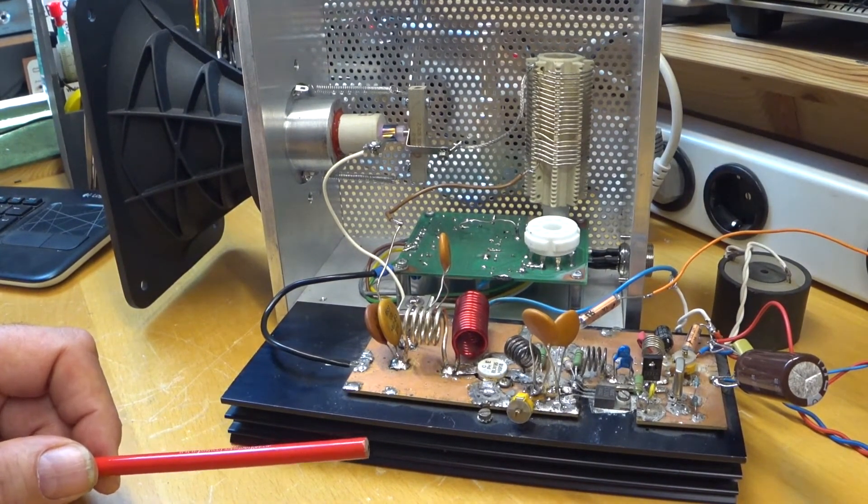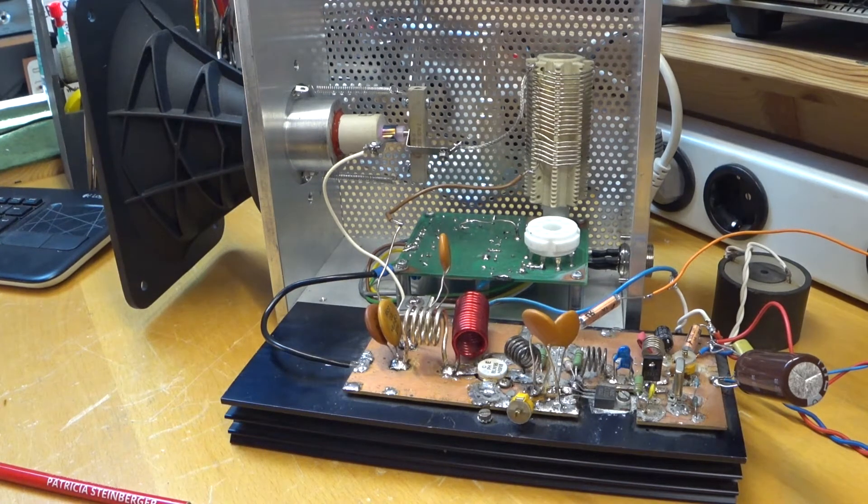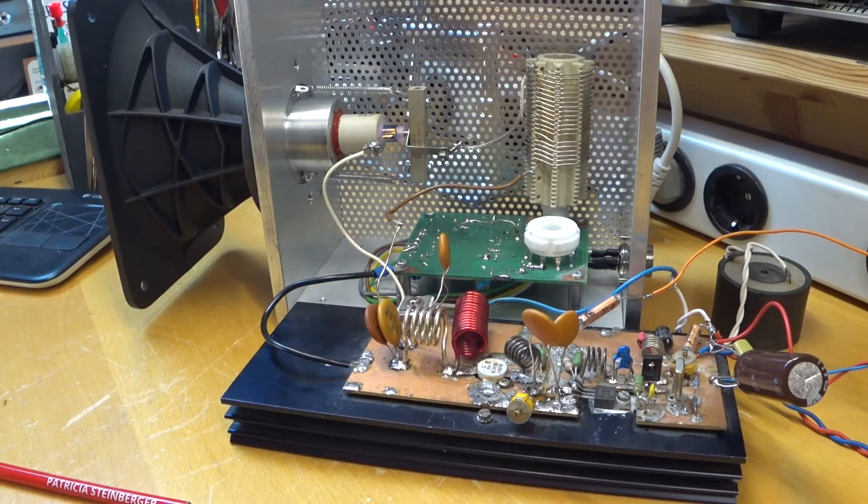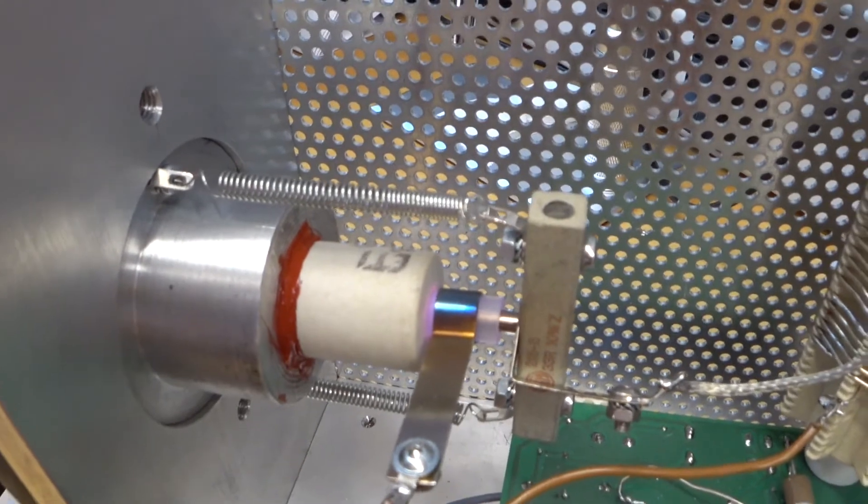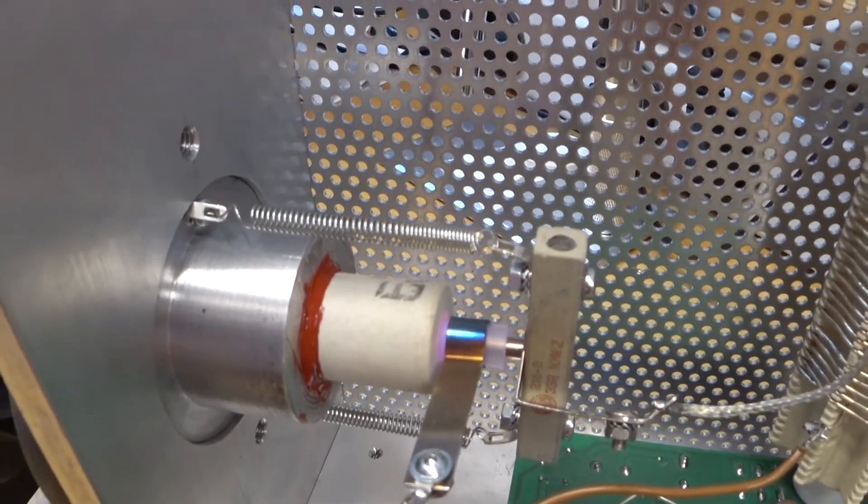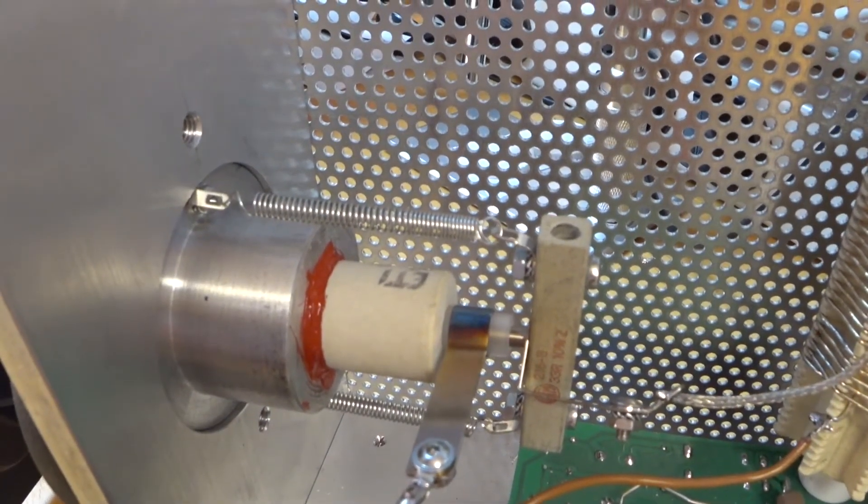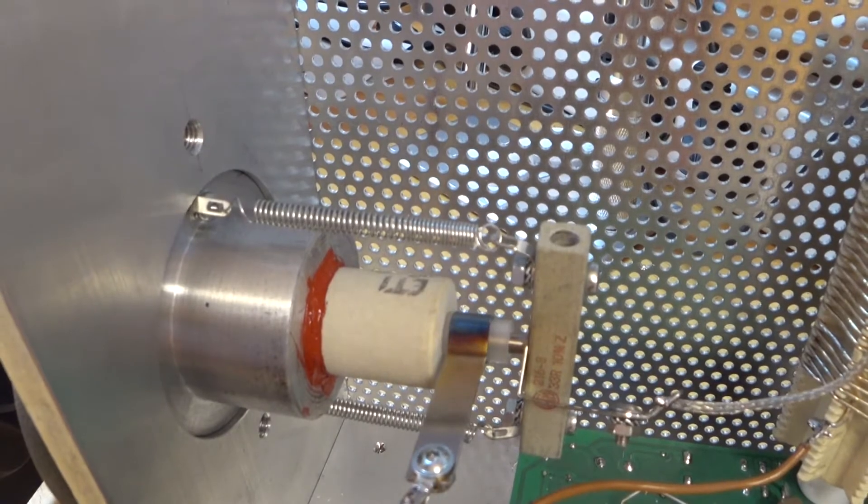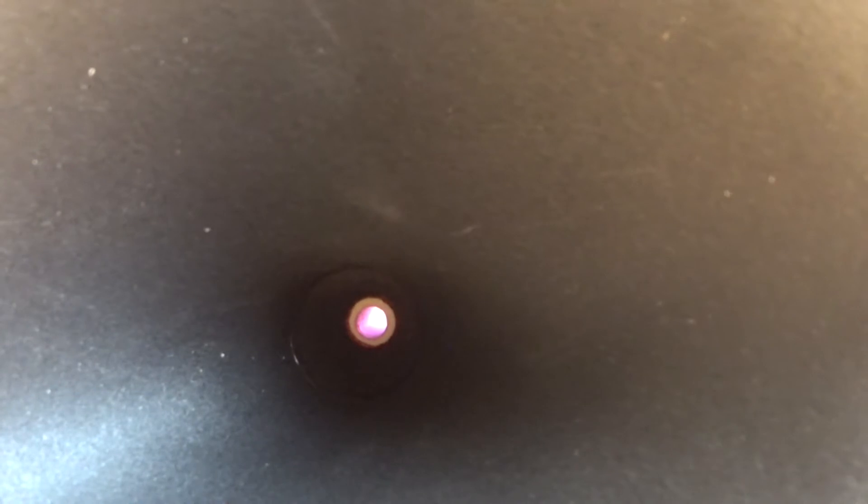We can see the plasma flame is burning. I don't know if the camera can capture this. There's the plasma flame. Let me dim the light a little bit. I can turn it off and turn it on - off, on. As you can see here, the plasma flame is on.